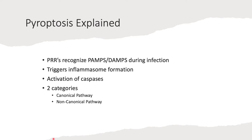The innate immune system uses PRRs — pattern recognition receptors — to recognize PAMPs and DAMPs during infection. A PRR could be a TLR (toll-like receptor) or an NLR (NOD-like receptor). PAMPs are pathogen-associated molecular patterns, and DAMPs are damage-associated molecular patterns — just a refresher on these acronyms.